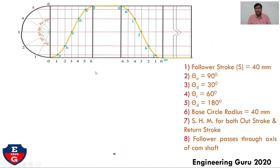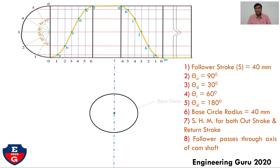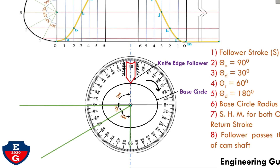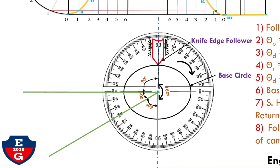Now we will draw the cam profile. Take one random center point. It is given that the follower passes through the axis of the cam shaft, so draw one vertical axis line passing through this point. The cam base circle radius is 40 mm, so draw a circle with radius 40 mm and draw the knife-edge follower on the axis line. Assume the cam rotates clockwise since it is not given in the problem. Therefore, take all angles in the anti-clockwise direction from the reference line: outstroke 90 degrees, then dwell 30 degrees, then return stroke 60 degrees, and remaining dwell 180 degrees.